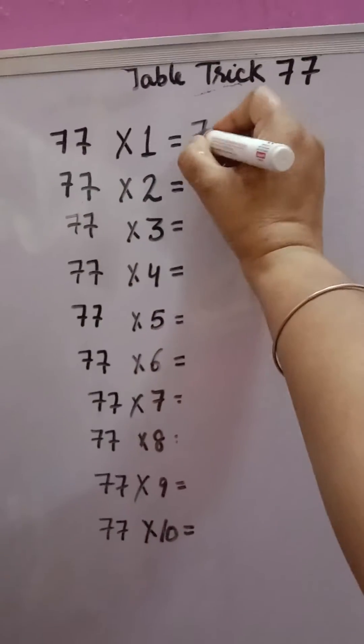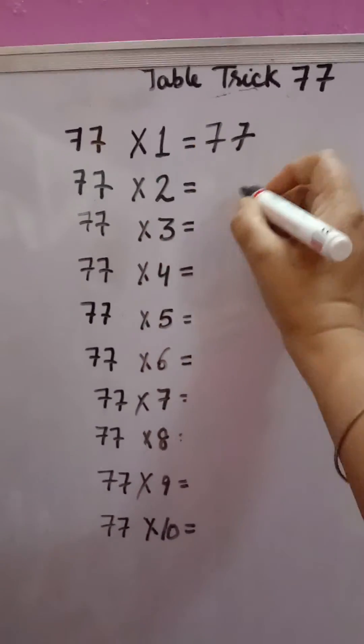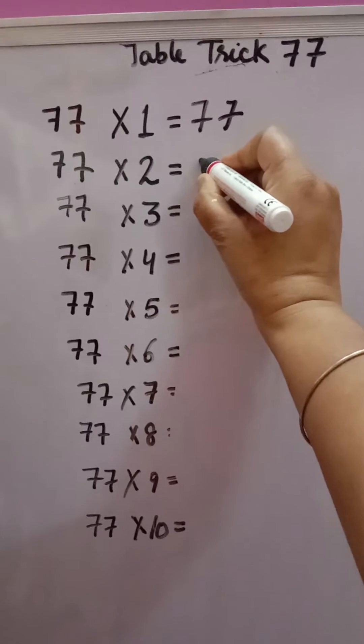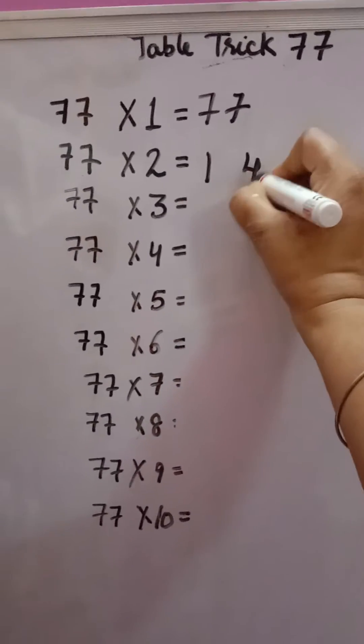Table trick for 77. 77 times 1 is 77. After that, you have to write the 7 table. 7 times 2 is 14. 1 and 4.